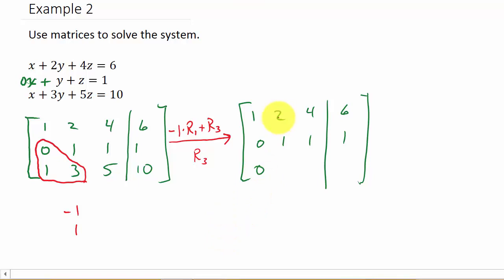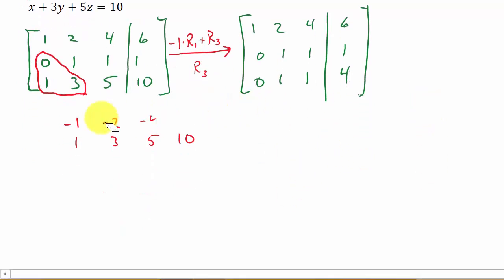Then, I'm going to multiply negative 1. I've got to multiply it by each element in this row. So negative 1 times 2 is negative 2. And then I have this 3 here. So negative 2 plus 3, and that gives me 1. And then I have negative 1 times 4 is negative 4 plus 5, and that gives me 1. And then I have negative 1 times 6 is negative 6, and then plus the 10. Well, negative 6 plus 10 is 4.